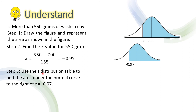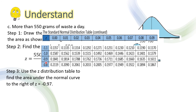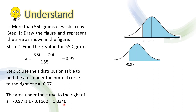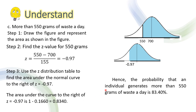For step 3, use the z-distribution table to find the area under the normal curve to the right of z = −0.97. Looking up −0.9 and 0.07, these intersect at 0.1660. Since the table gives the area to the left of a z-value, we subtract: 1 − 0.1660 = 0.8340. Hence, the probability that an individual selected at random generates more than 550 grams of waste a day is 0.8340, or 83.40%.